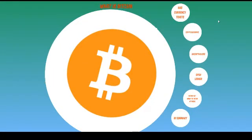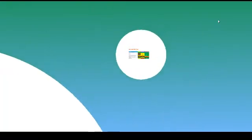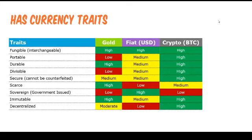Let's look at how Bitcoin compares to traditional currency and the technology behind it. The great Greek philosopher Aristotle considered that every object has two uses: the first being the original purpose for which it was designed, and the second being its use as a medium of exchange. To be a medium of exchange or currency, the object has to have certain currency traits. It has to be fungible, portable, durable, divisible, secure, scarce, sovereign, immutable, and decentralized. The last three traits are arguable, but in my opinion, cryptocurrencies score high in most of them.